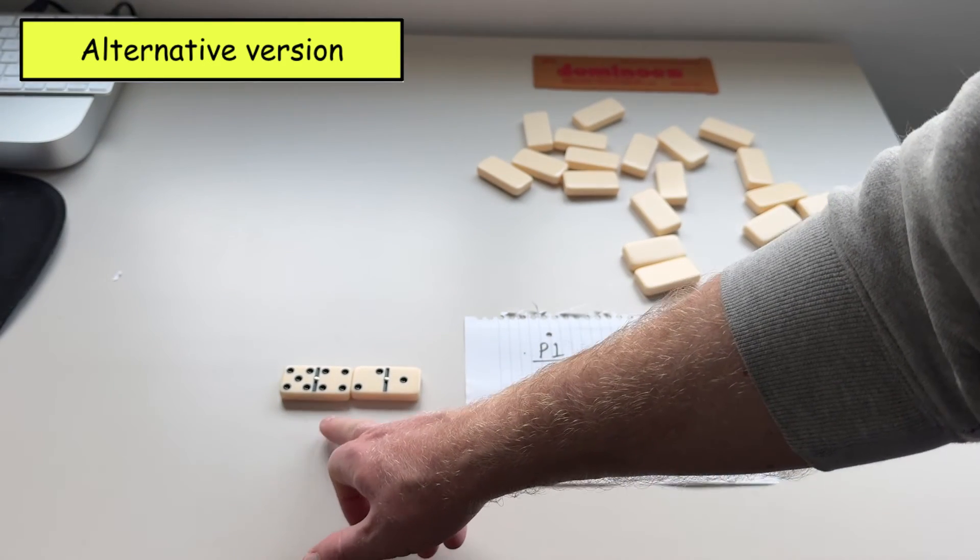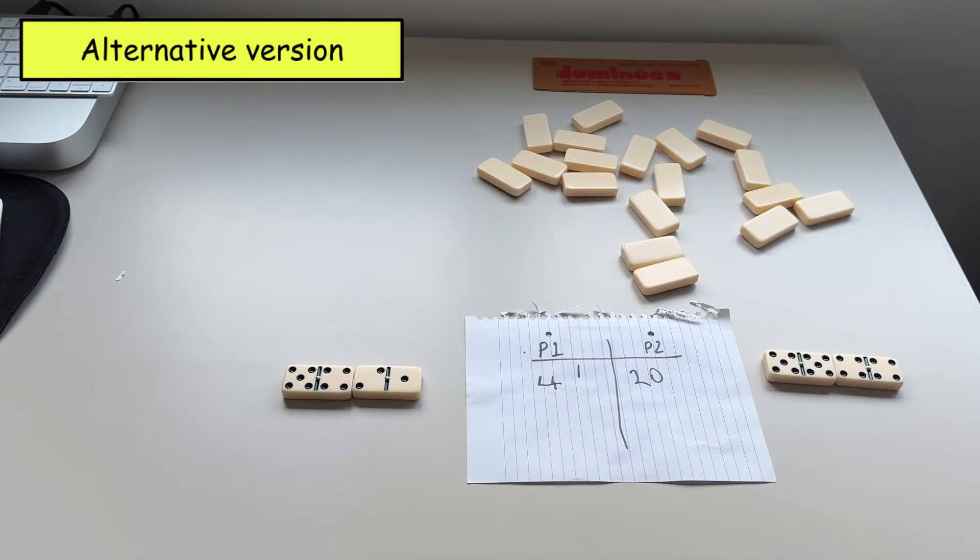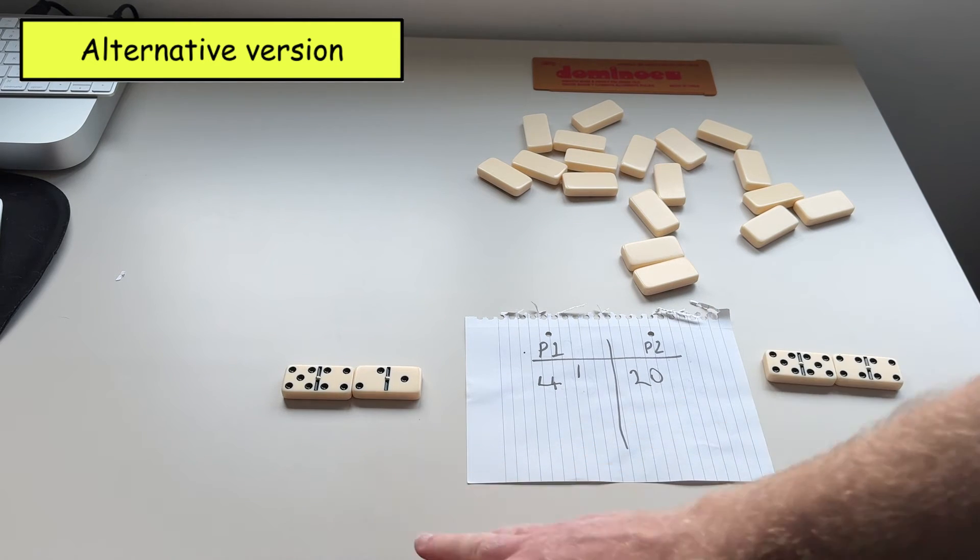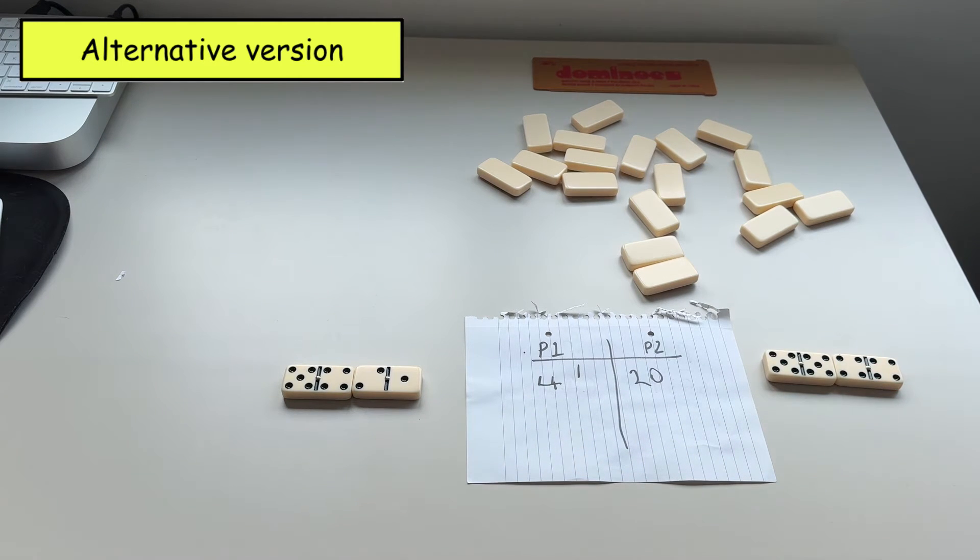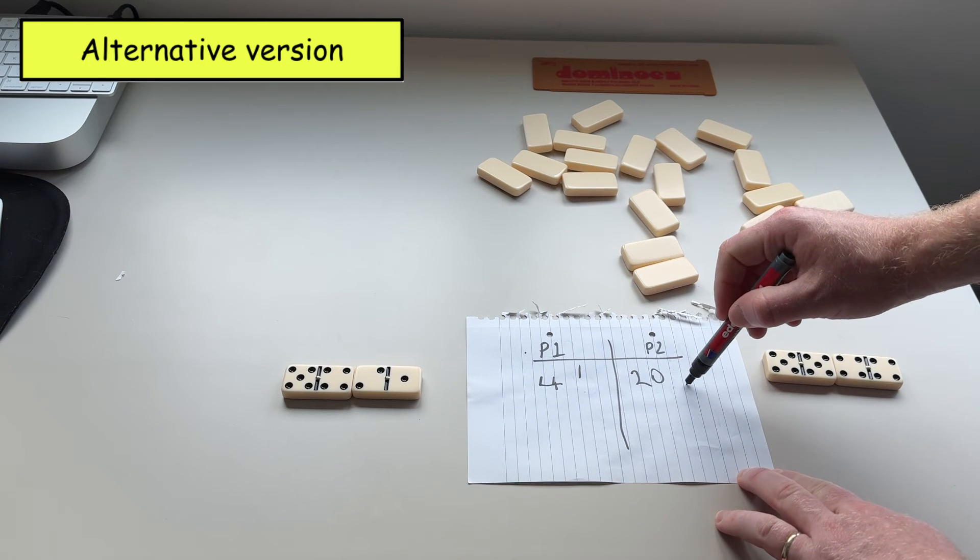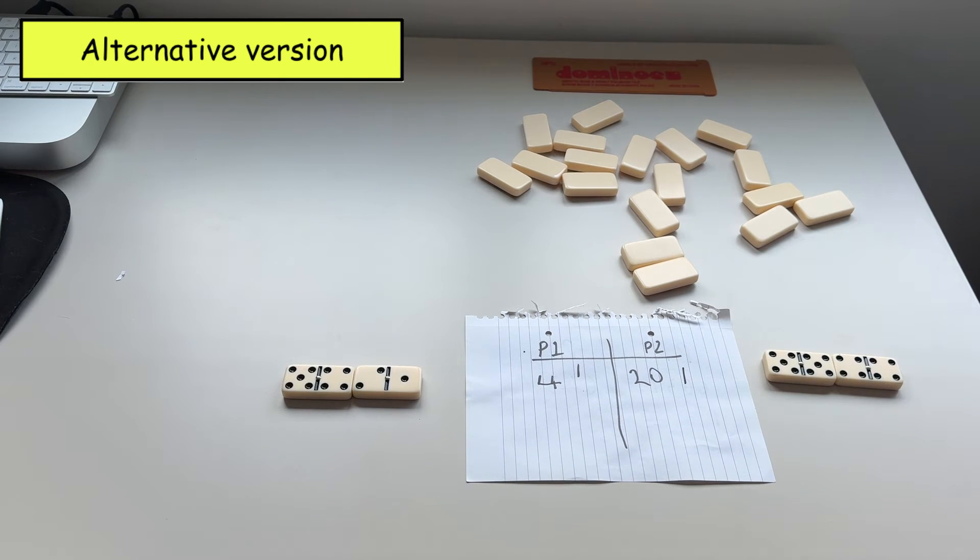And as you can see here player one has now improved the number that they had the first time. So now they have five thousand four hundred and twenty one. But unfortunately for player one they have still lost because they do not have the highest number. So that's a point for player two. And that is another rule that you can add.